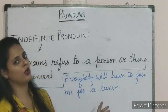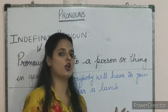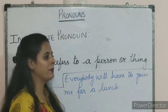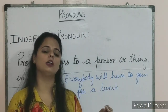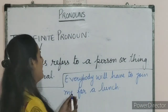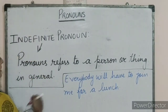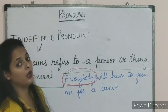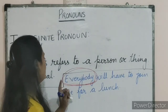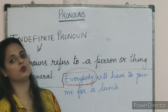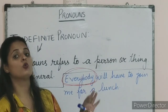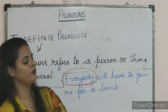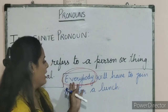I am referring it to each and everybody. I am not telling 'Sumit have to join me for lunch' or 'Raj have to join me for lunch' or 'Manasvi have to join me for lunch' or 'Bhumika have to join me for lunch.' I am not telling all these specific names. What I am telling is 'everybody.' So this word everybody is used in a general manner, and it states that all the persons to whom this message is conveyed are cordially invited for a lunch.